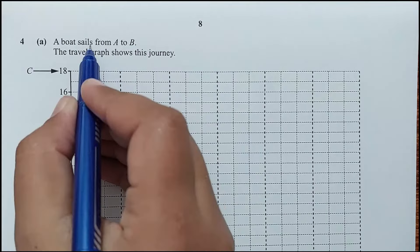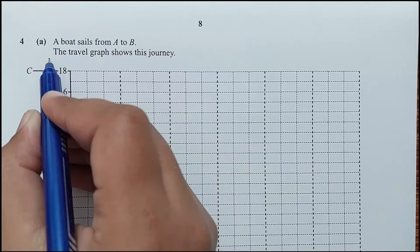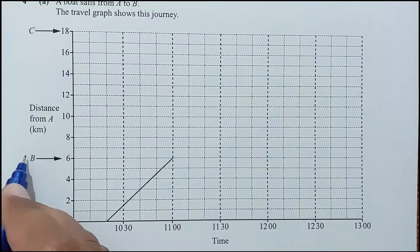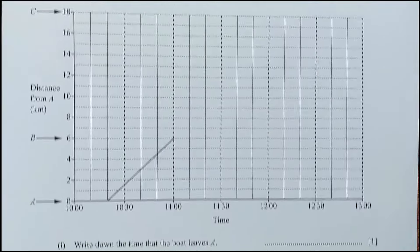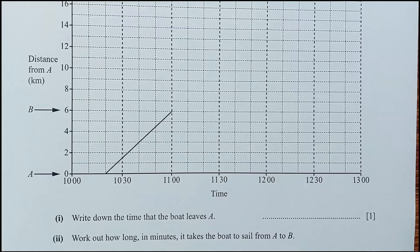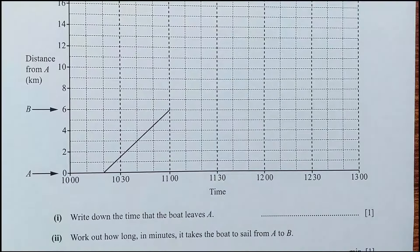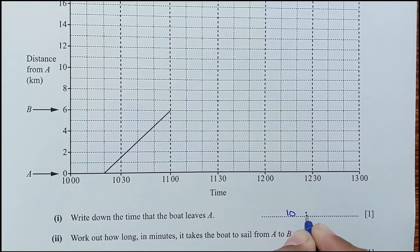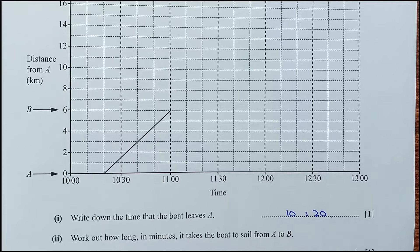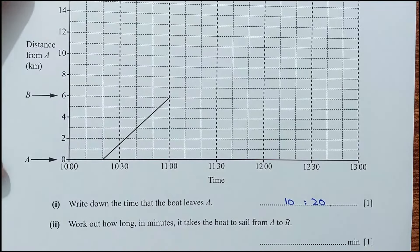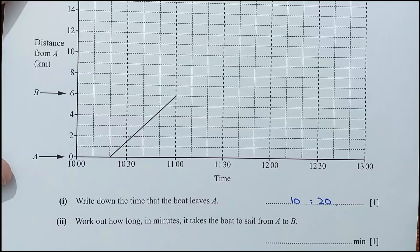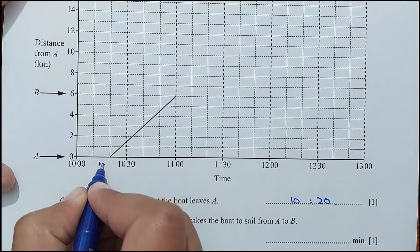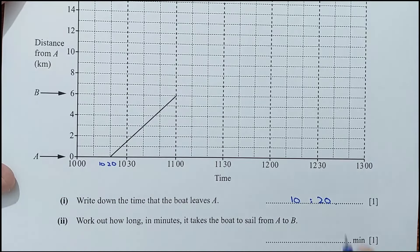Question 4, part A. A boat sails from A to B shown on a travel graph. Part 1: the boat leaves A at 10:20. Part 2: work out how long it takes to sail from A to B. From 10:20 to 11:00 is 40 minutes.